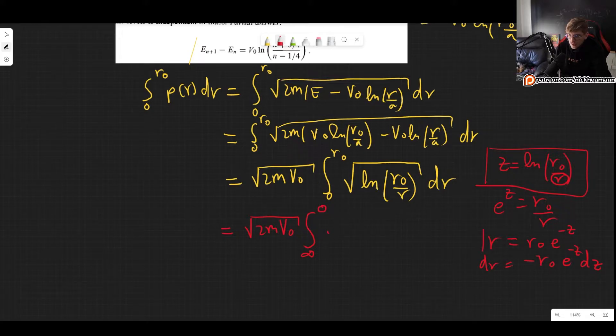Okay now everything else. So we have a square root of Z and then dz which is minus. So we can put it here in the front. R0 e to the minus Z dz.